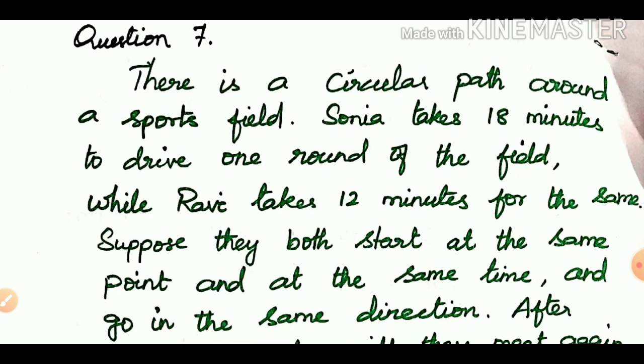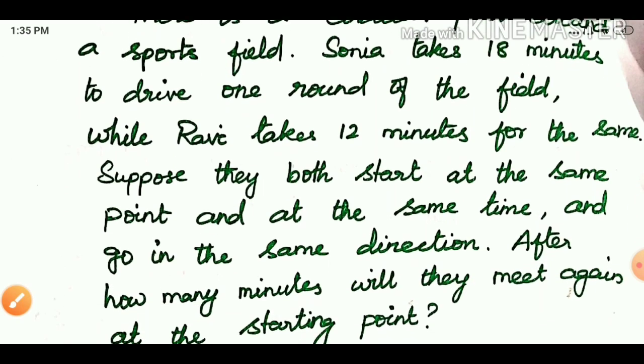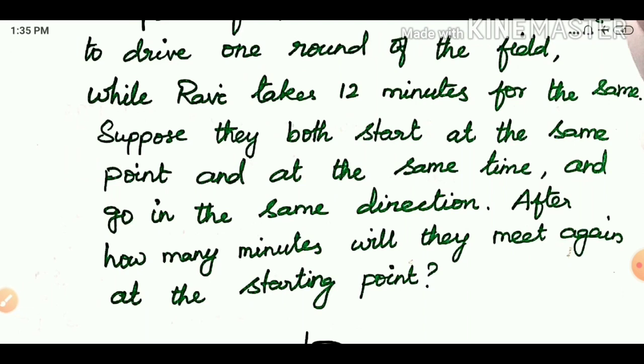Question 7: There is a circular path around a sports field. Sonia takes 18 minutes to drive one round of the field, while Ravi takes 12 minutes for the same. Suppose they both start at the same point and at the same time, and go in the same direction. After how many minutes will they meet again at the starting point?